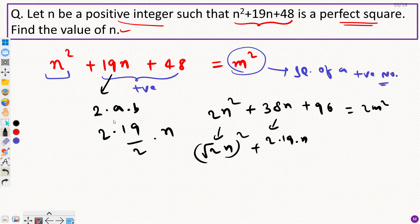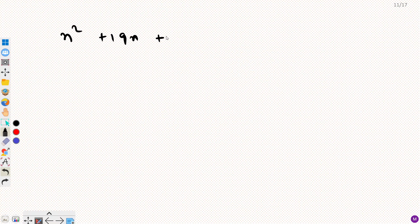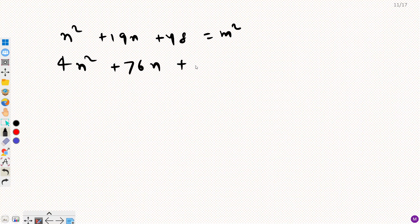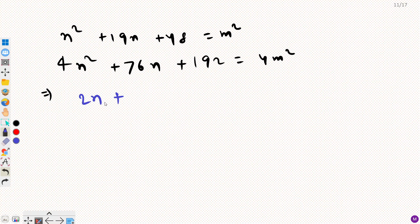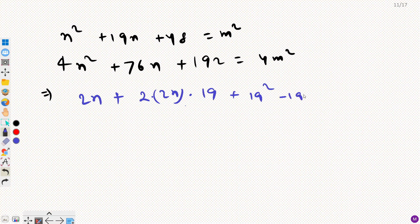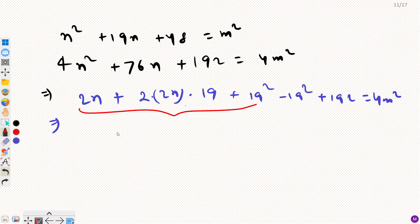So we need to multiply by a different number. Let's multiply by 4: 4n squared plus 76n plus 192 equals 4m squared. Now let's try to make this a perfect square. Taking 2n as the first term, we get 4n squared, and 2 times 2n times 19 gives 76n. So adding and subtracting 19 squared: we get (2n+19)² minus 361 plus 192 equals 4m squared.